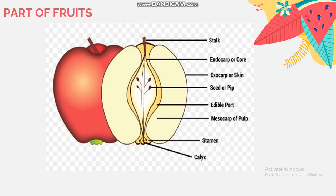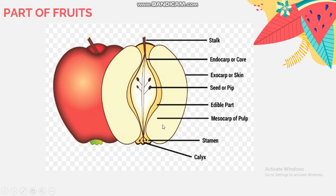Look at the pictures. This is the part of fruits. There are four main parts of the fruits. They are: stalk, which means tangkai buah; exocarp or outer skin, which means kulit buah; mesocarp or pulp or flesh, which means daging buah; and also the seed, which means biji.